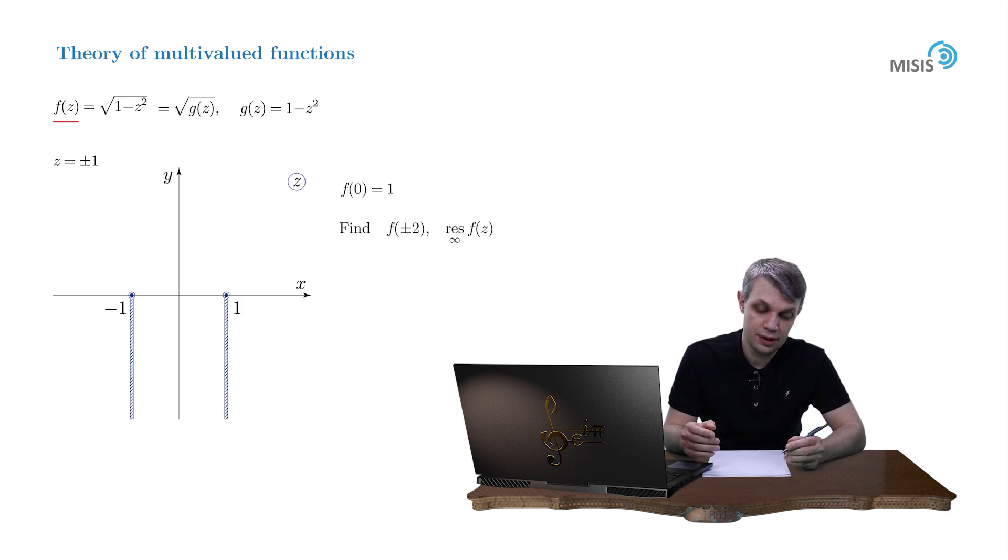The most efficient way to work with regular branches is the geometrical interpretation of the function under the root. We see that g function can be split into the product of two factors: 1 minus z and 1 plus z.